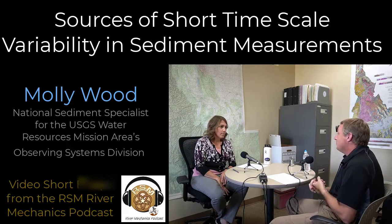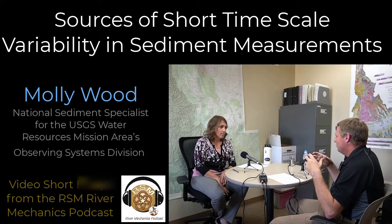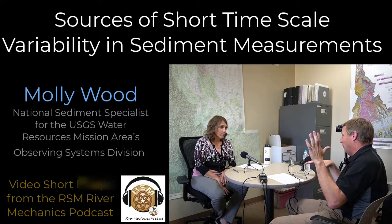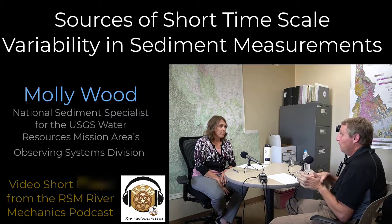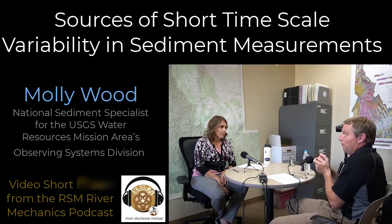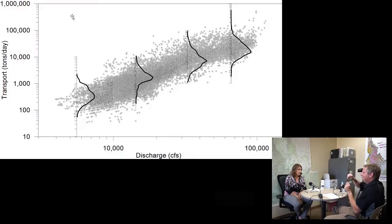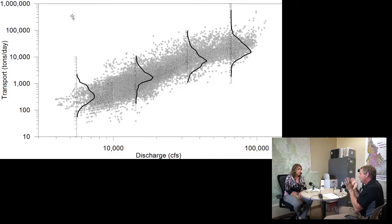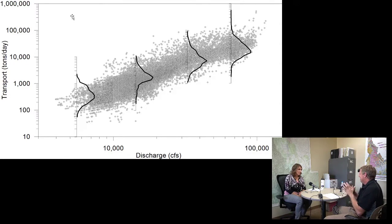The most common data are the suspended sediment. When we plot those against flow, we have what we call a flow-load relationship. So for a particular flow, we can come up with a relationship of what's the load. But those data often have a lot of scatter. If you plot the suspended sediment data against the flow, sometimes we call it a data cloud instead of a rating curve, because it just has an order of magnitude of scatter.